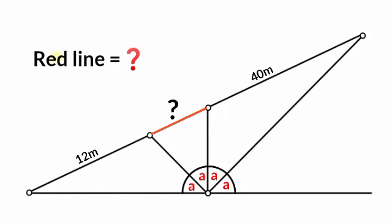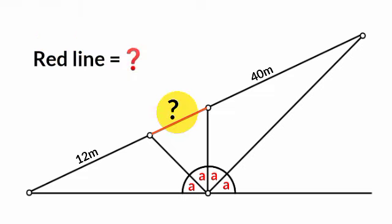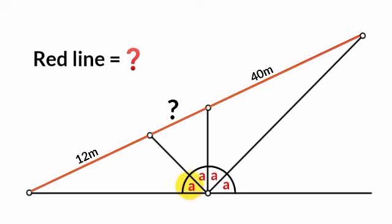Hi everyone. From here we are asked to calculate the length of the red line, which is this side here. We have the length of this part to be 12 meters, while this is 40 meters. We have the size of this angle, this, this, and this to be A each.